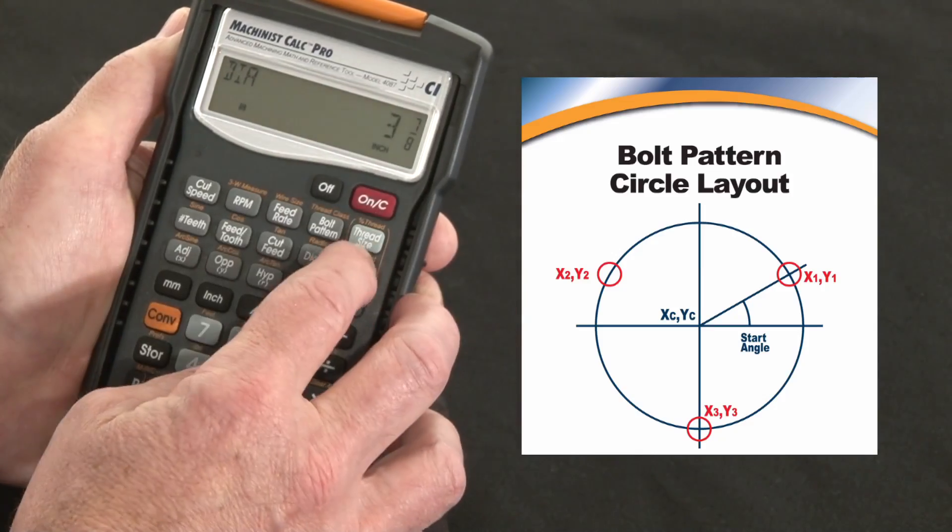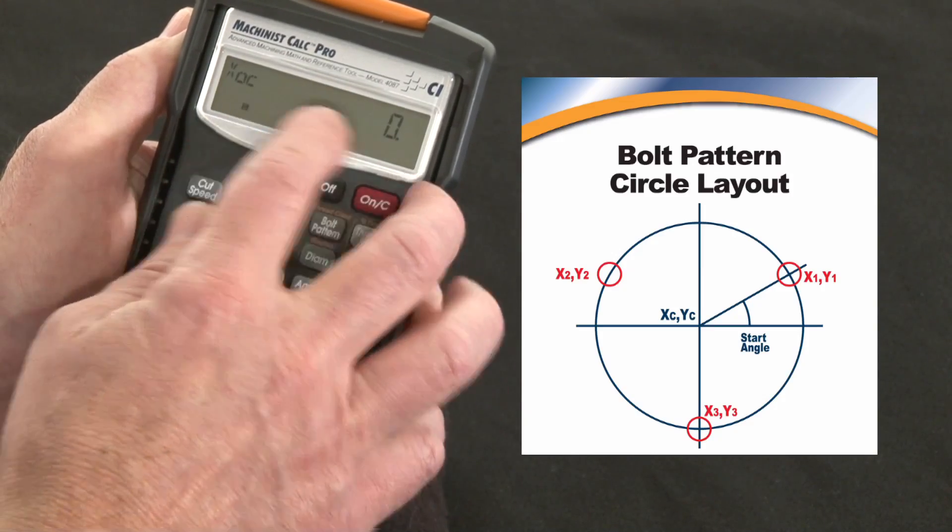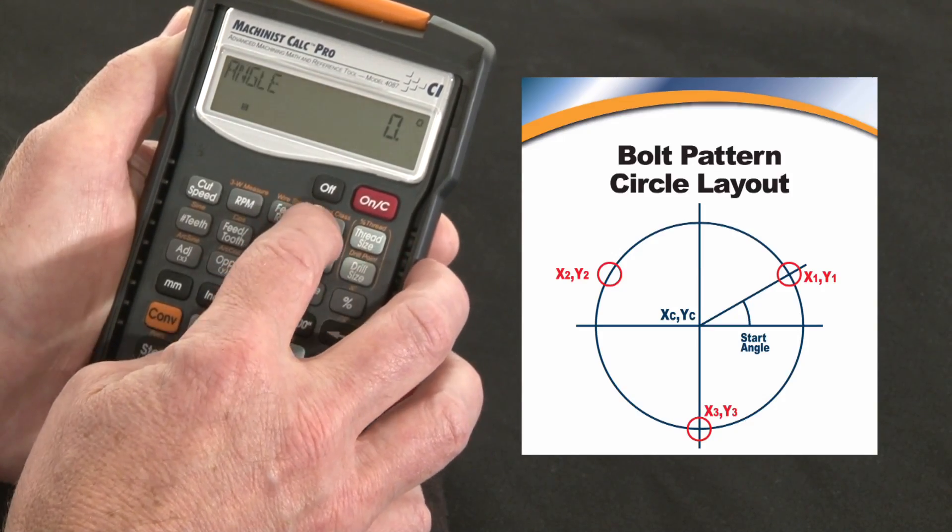Then it'll tell me again what the diameter of the circle was, just to confirm it, and what my centers were at the very center of the circle.